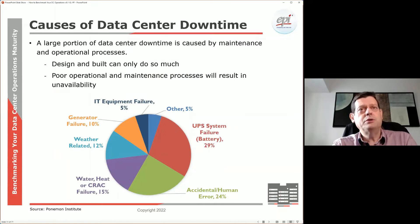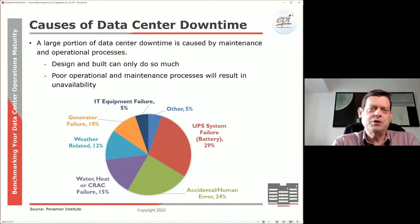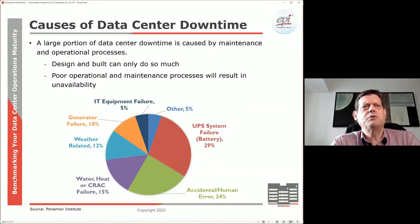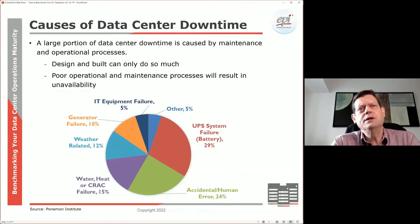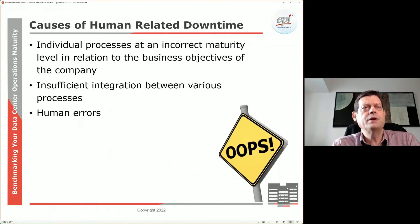So what is the typical issue in data centers — why do data centers go down? There is a variety of research in the market, and we've picked out one here. The numbers typically vary across research, but it's more to give an idea: there is a portion attributable to mechanical failures — the typical UPSs, generators, cooling systems, and so forth. But there's also a large portion due to accidents and human error, and that is where we need to put good focus.